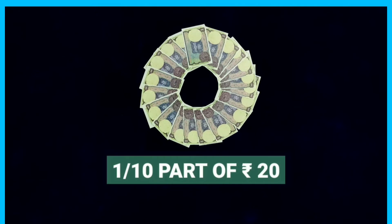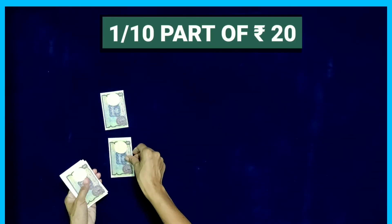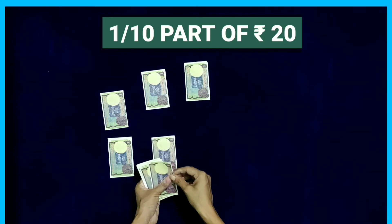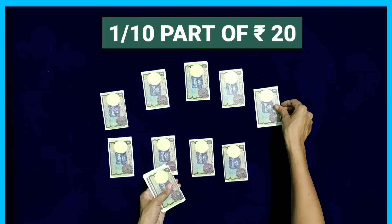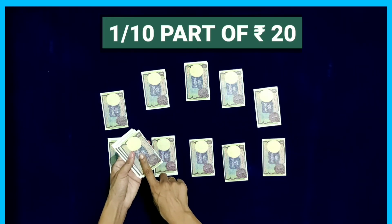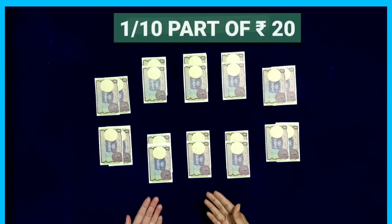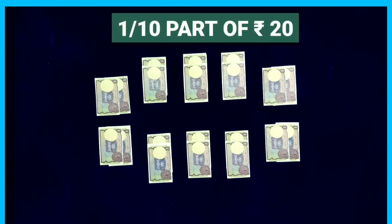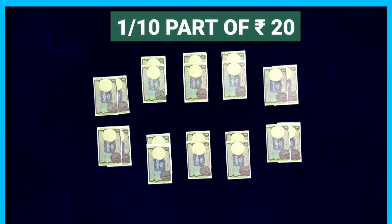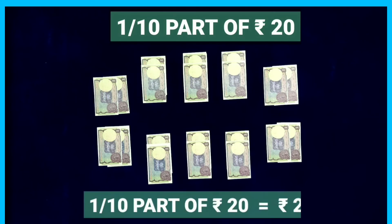Now let us solve Part E of question 3: find 1/10 part of 20 rupees. We have taken 20 notes of 1 rupee and divide them into 10 equal parts, placing notes one by one into each part. After distributing all 20 notes, each part contains 2 rupees. Therefore, 1/10 part of 20 rupees is equal to 2 rupees.